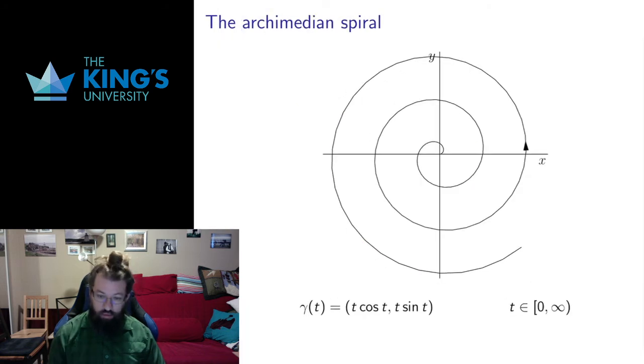The Archimedean spiral is a spiral where the radius grows linearly. So you notice here these are all equally spaced out is that the radius goes from here to 1, to 2, to 3, to 4. So each loop around we just add one to the radius.